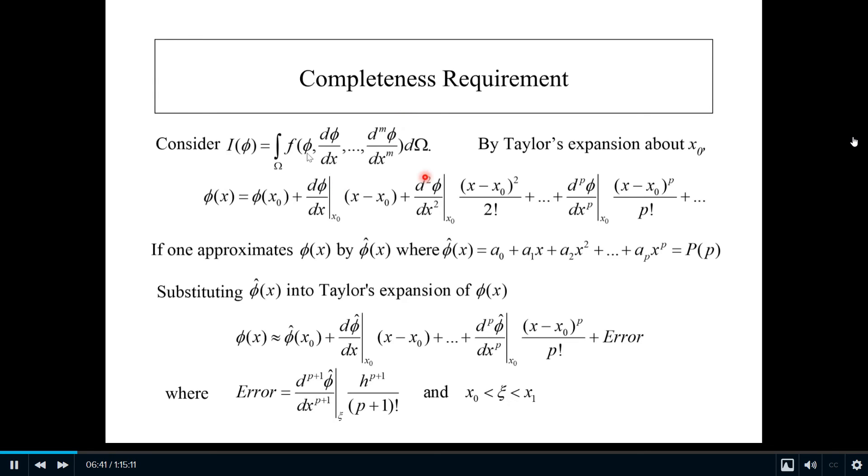We try to approximate phi using Taylor series expansion about a certain point x_0. We approximate phi around point x_0, so we have this term. As you know, this series is an infinite series, so you can go on and on, but eventually we have to truncate the series.